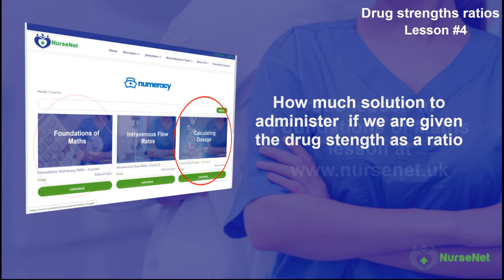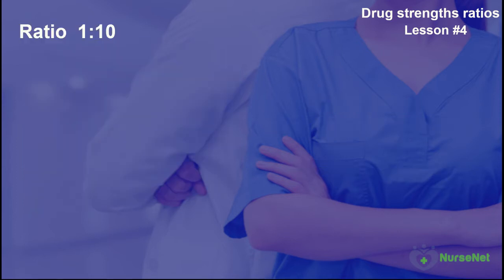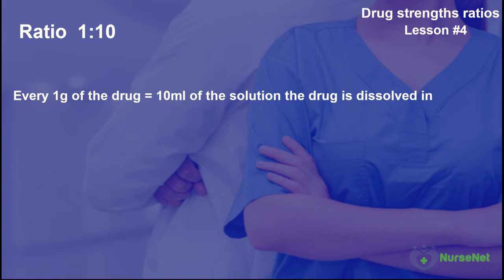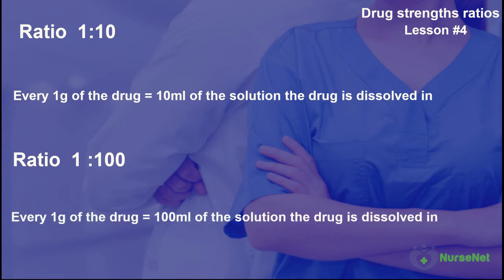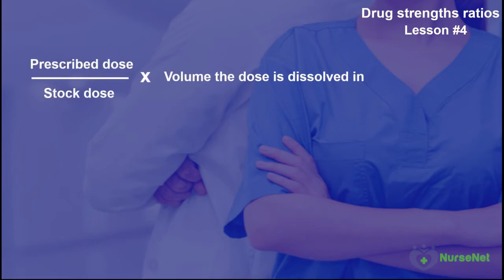If you're not confident with understanding ratios, go back to the Foundation of Maths course on NurseNet Numeracy and redo the ratios lesson and the accompanying test. A typical ratio of 1 to 10 means that for every 1 gram of drug, there are 10 milliliters of solution that the drug is dissolved in. Another example would be 1 to 100, where for every 1 gram of drug, there is 100 milliliters of solution. If we're given a prescription with a ratio, we can think back to our drug calculation formula — prescribed dose divided by stock dose multiplied by the solution — and substitute the stock dose with a dose concentrate.